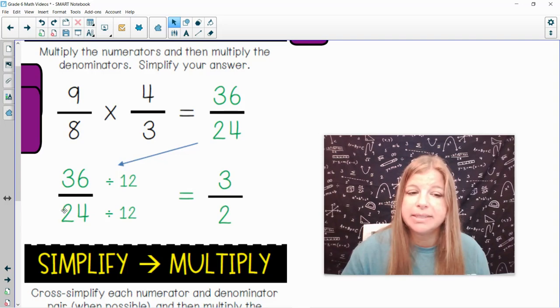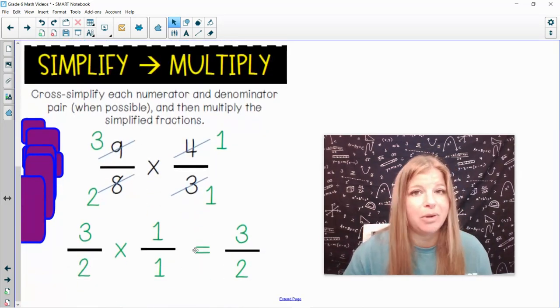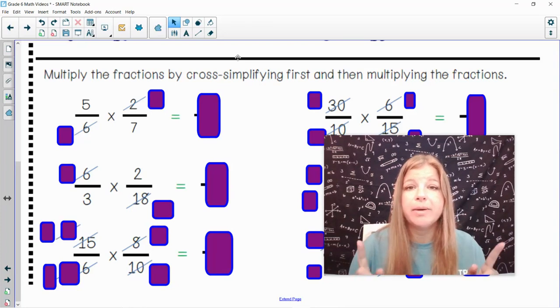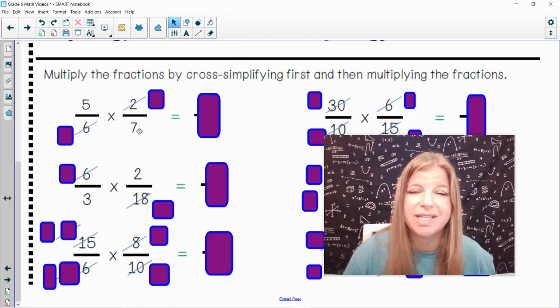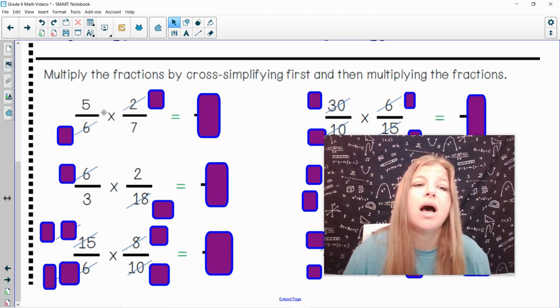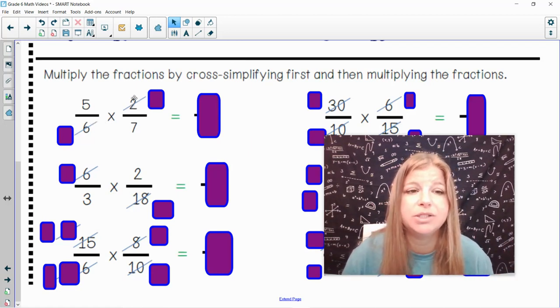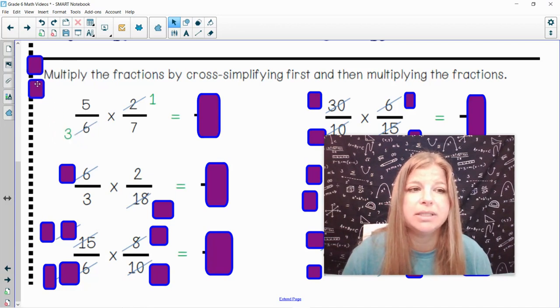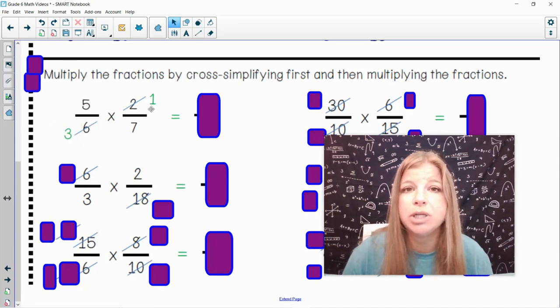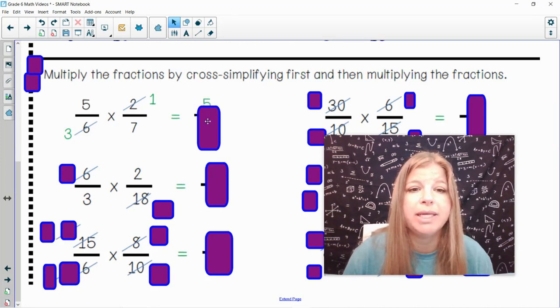So that's the moral of this lesson. You can multiply and then simplify, or you can cross-simplify first and then multiply what you have left over. Okay, so now in this next set, I'm going to do the first three problems with you, and then I'm going to leave you to do the last three on your own. 5 6ths times 2 7ths. I can't cross-simplify 5 7ths. But I can simplify 2 6ths. 2 6ths are both divisible by 2. And so if I divide both of them by 2, 2 divided by 2 is 1. 6 divided by 2 is 3. And if I multiply straight across what I'm left with, 5 times 1 is 5. 3 times 7 is 21.